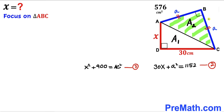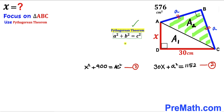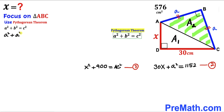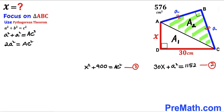Now let's apply the Pythagorean theorem to right triangle ABC as well. The hypotenuse is again side AC, and the two legs are both lowercase a. Substituting: a squared plus a squared equals AC squared, so therefore 2 times a squared equals AC squared. We label this as equation 4.